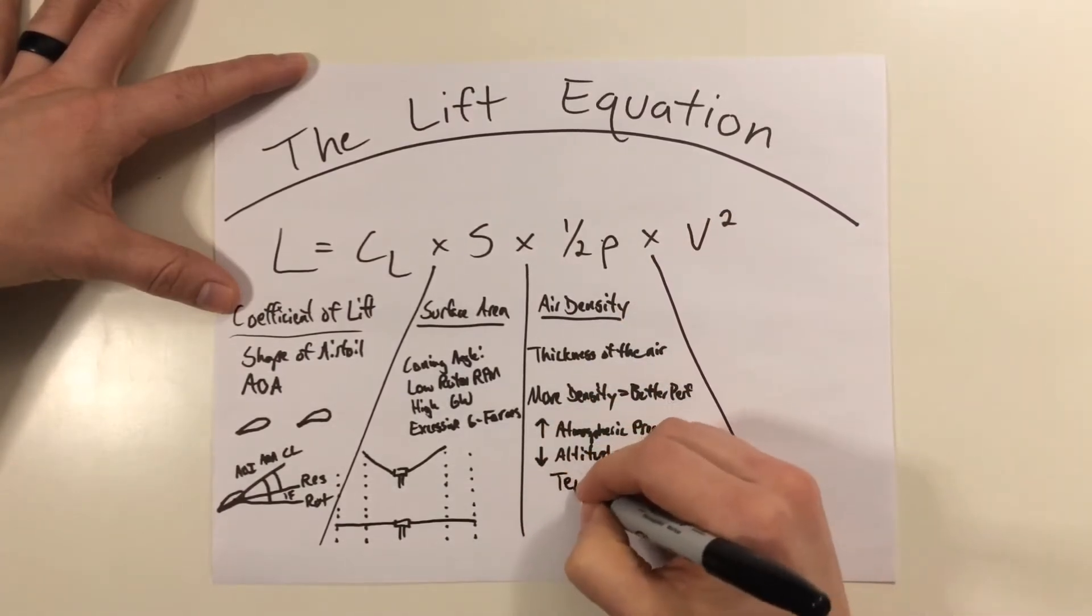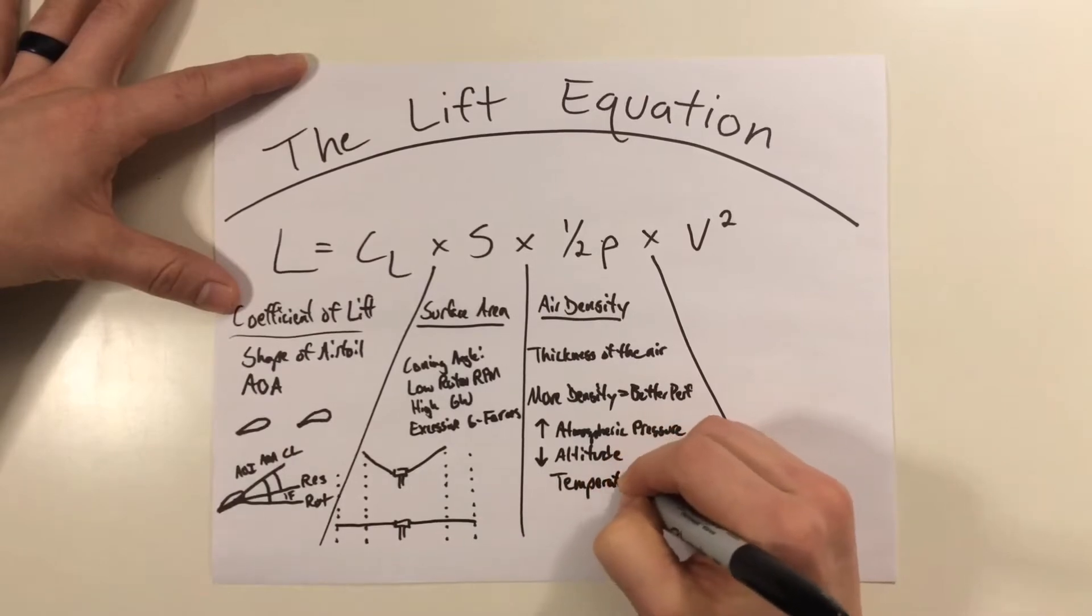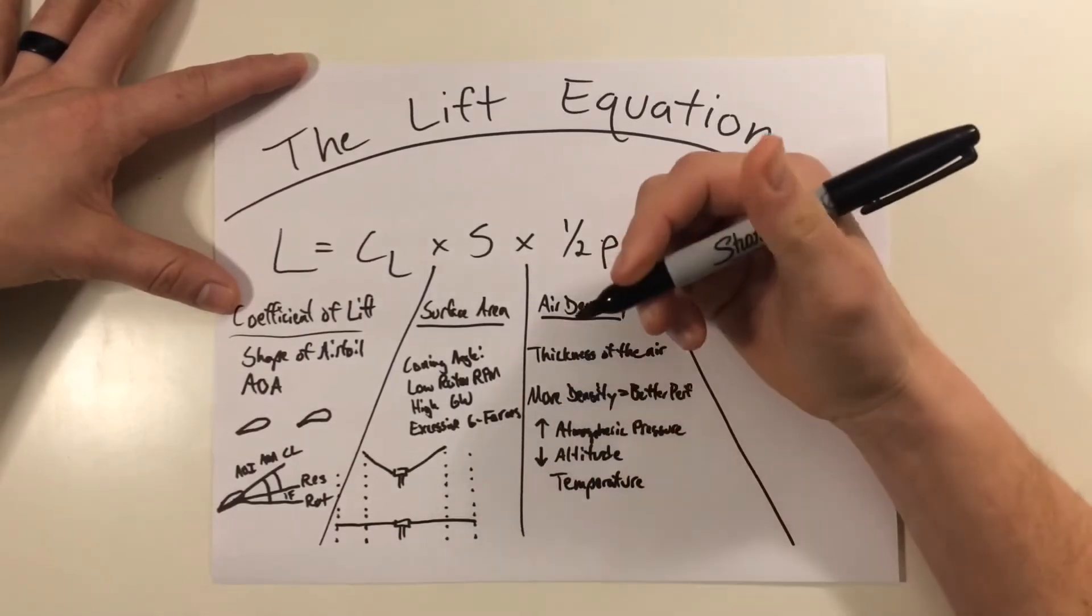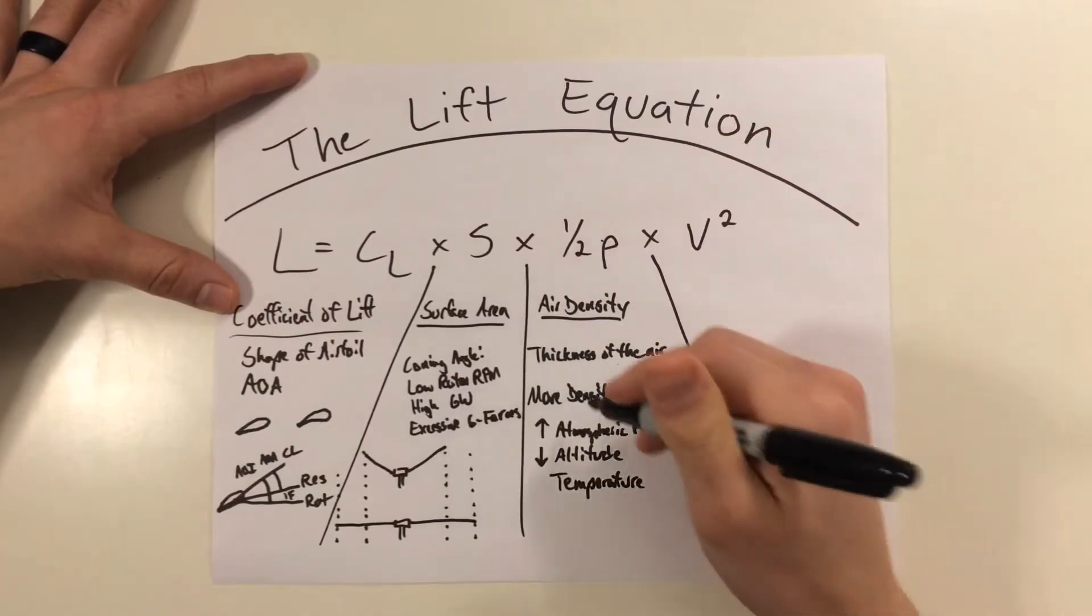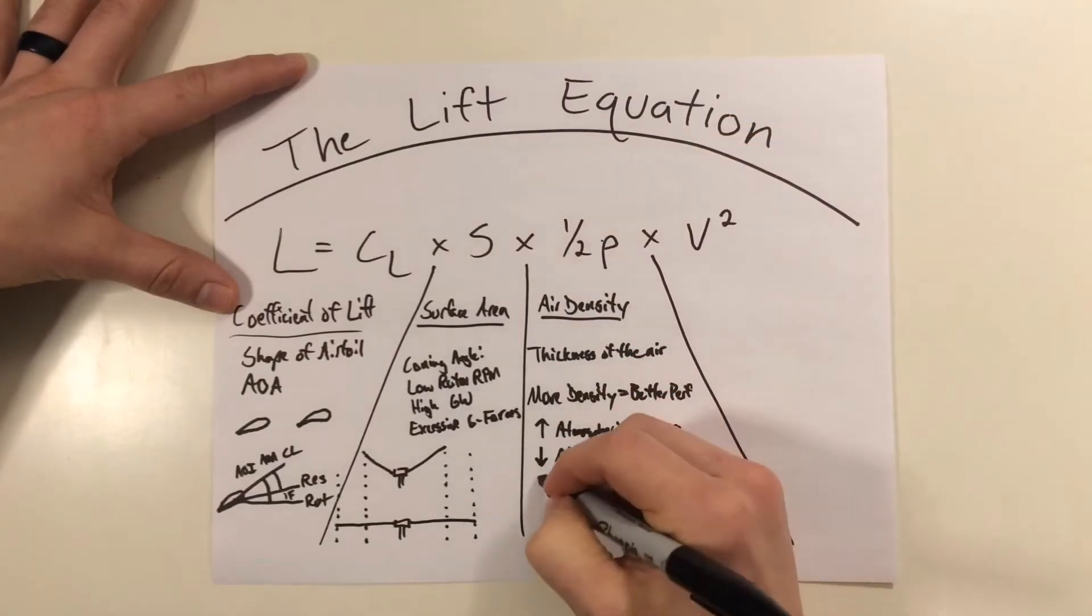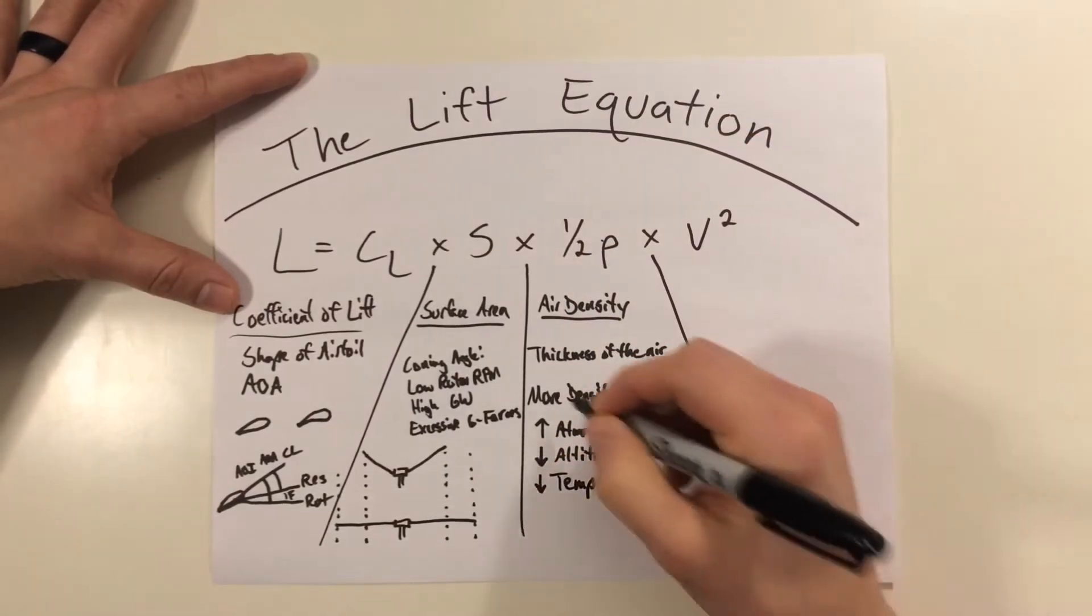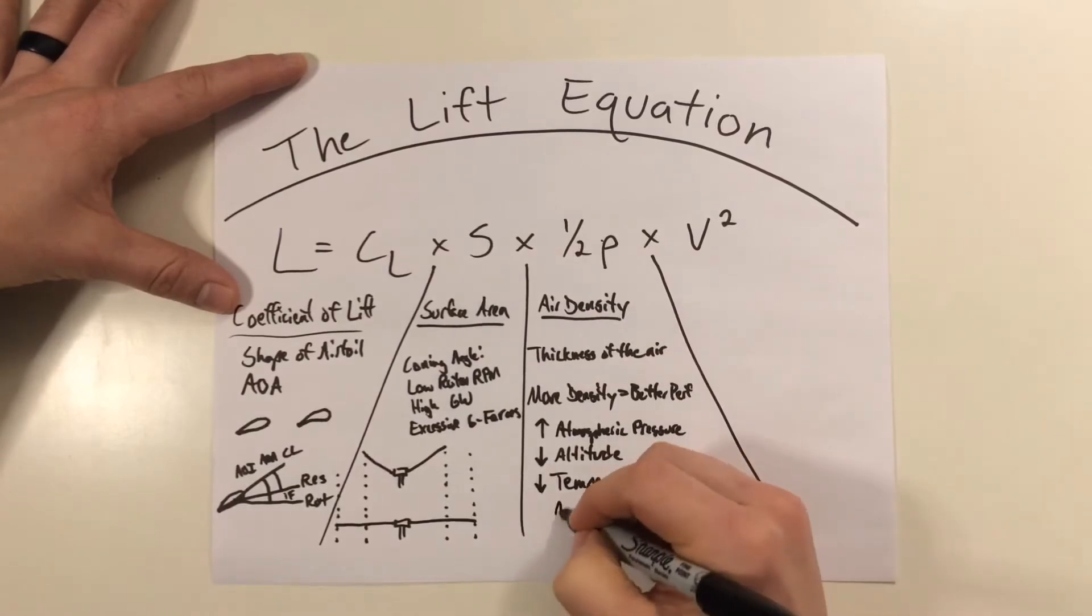Next factor to consider, the temperature. As we consider temperature, warm air expands and moves farther apart, which reduces our density. So we want a lower temperature for better performance and more dense air.